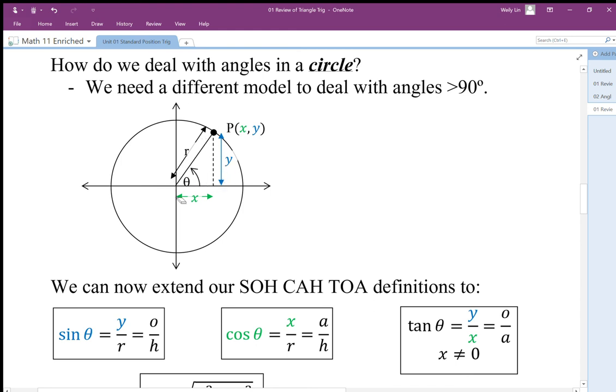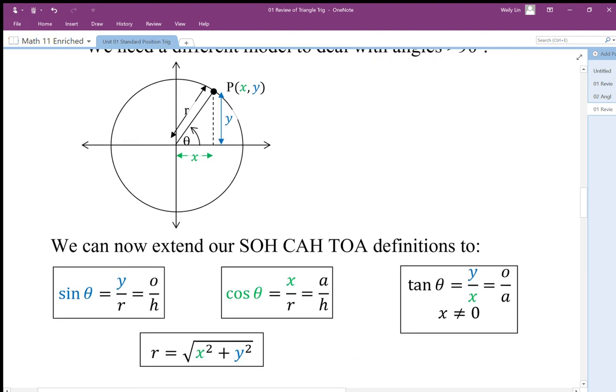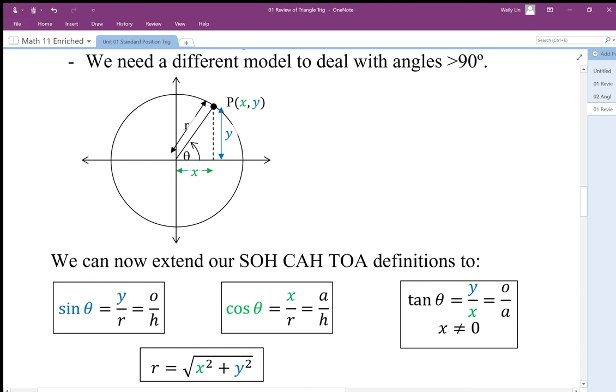The reason we want to do this is because if we slightly change our definition, instead of adjacent over hypotenuse, using x we can now go backwards in this quadrant here and describe an angle bigger than 90 degrees. If I go negative x and positive y, I get an angle over here with negative x, positive y, and we can do trig on that angle using those definitions.